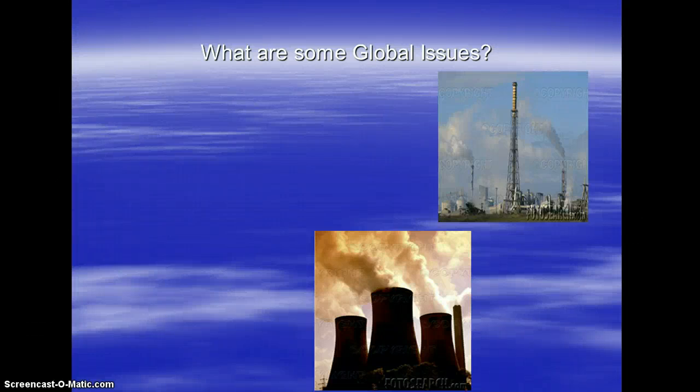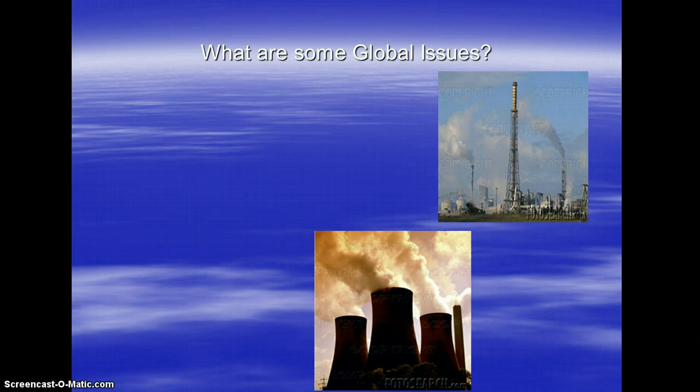Hi guys, this is segment 5, unit 1, Clean Air Act and Acid Rain. So far we've covered earth system science, spheres, sphere interactions, and biogeochemical cycles and all the things that go with that. We also have human impact that we need to cover, and that's going to be the rest of this unit.